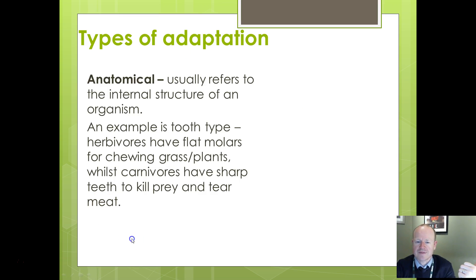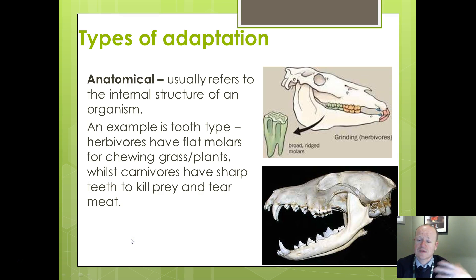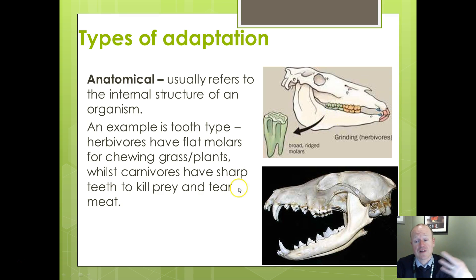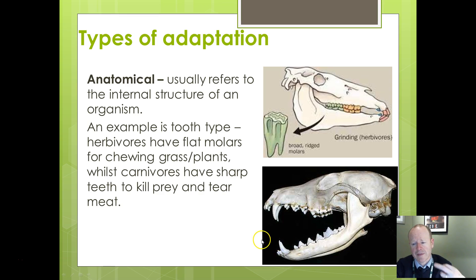There are different types of adaptation. Anatomical — sometimes called morphological — adaptations relate to external physical features. A classic example is tooth type, comparing herbivores versus carnivores: a deer versus a fox. Herbivores have flat, grinding, ridged teeth for chewing up and breaking down cellulose to extract nutrients. Carnivores have sharp canines to paralyse prey and sharp carnassial teeth at the back of the mouth to scissor and tear flesh.